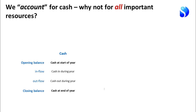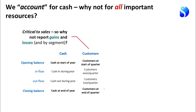We know how much cash we had at the start of the year, how much flowed in, how much flowed out, and we end up with cash at the end of the year. If customers are critical to sales, why do we not report gains and losses of customers in exactly the same way? Customers at the start of the quarter, customers won during that quarter, customers lost during that quarter — giving you the customers we end up with at the end of the quarter.